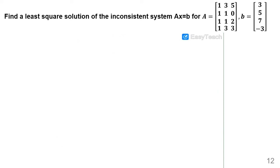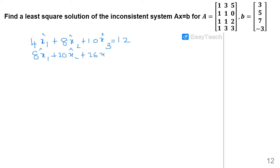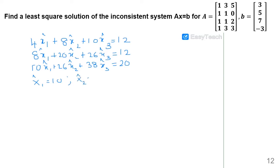The three equations are: 4x̂1+8x̂2+10x̂3=12, 8x̂1+20x̂2+26x̂3=12, and 10x̂1+26x̂2+38x̂3=20. Solving these, x̂1=10, x̂2=−6, x̂3=2. So x̂ = [10, −6, 2]ᵀ.